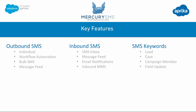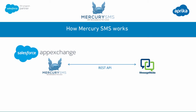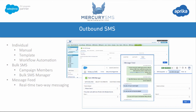We're going to be taking a look at those features in a bit more detail as we go through the demo. So looking at how Mercury SMS works: you need to be using Salesforce Enterprise Edition or above, and what you need to do is go to the AppExchange and install Mercury SMS. Mercury is built natively on the Salesforce platform but integrates via a REST API with a gateway provider called MessageMedia. We're going to take a quick look at all of the ways we can send an outbound SMS from within Salesforce.